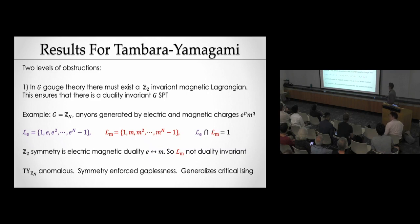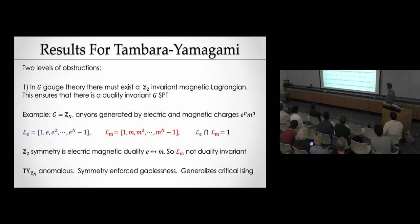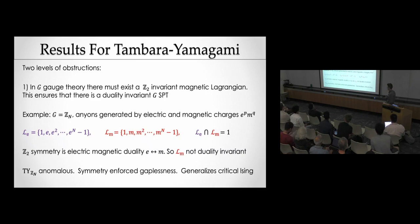Adding a Z2 SPT before gauging corresponds to a Frobenius-Schur indicator. There are now two levels of obstruction. The first: in G gauge theory, there must exist a Z2-invariant magnetic Lagrangian — this ensures there is a duality-invariant G SPT. For example, if G is ZN, the anyons are generated by electric and magnetic charges E^p M^q. The electric Lagrangian consists of just the electric particles, and there's only one magnetic Lagrangian. They have trivial intersection, but if your Z2 symmetry is electric-magnetic duality exchanging E and M, then L_M is not duality-invariant — so the Tambara-Yamagami symmetry for group ZN is anomalous.